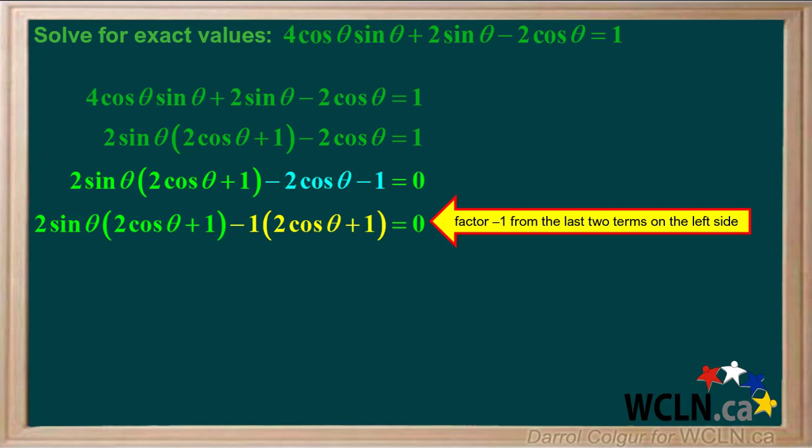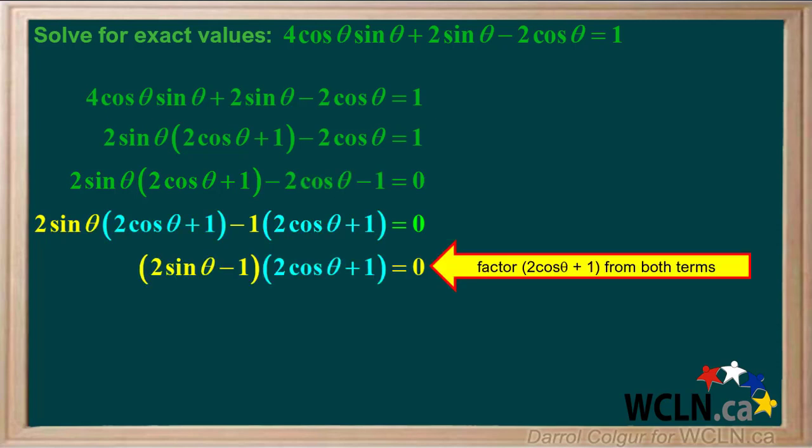Factoring negative 1 from the last two terms on the left side gives us negative 1 times 2 cos theta plus 1. Factoring 2 cos theta plus 1 from both terms gives us this product of two factors.